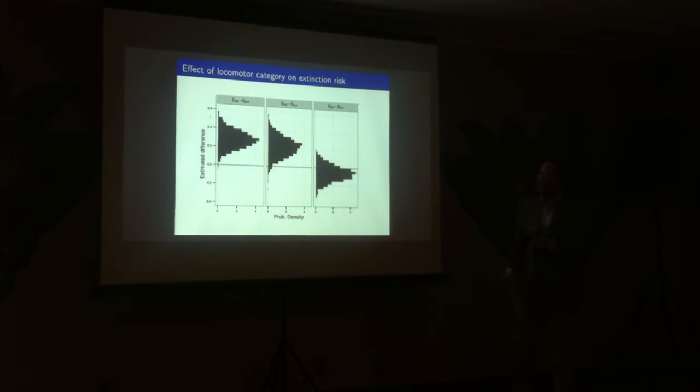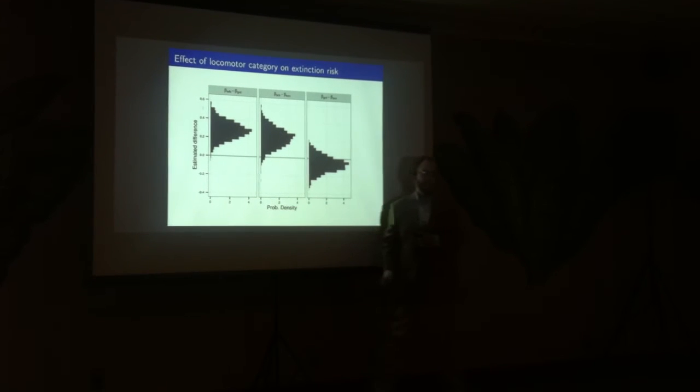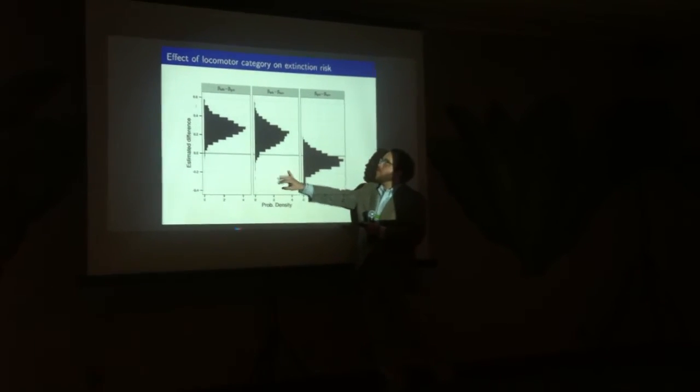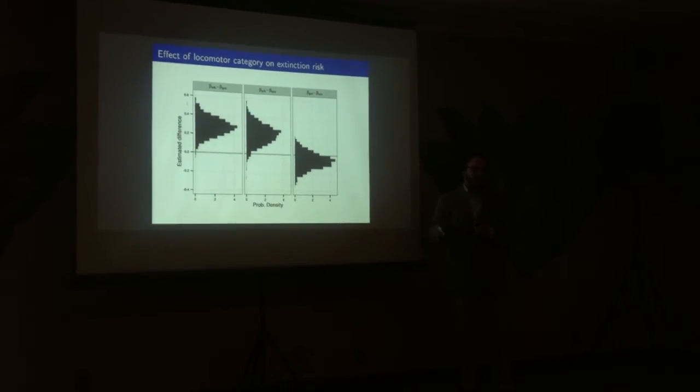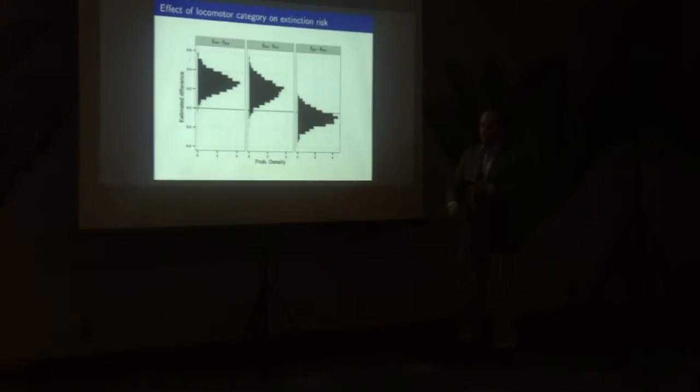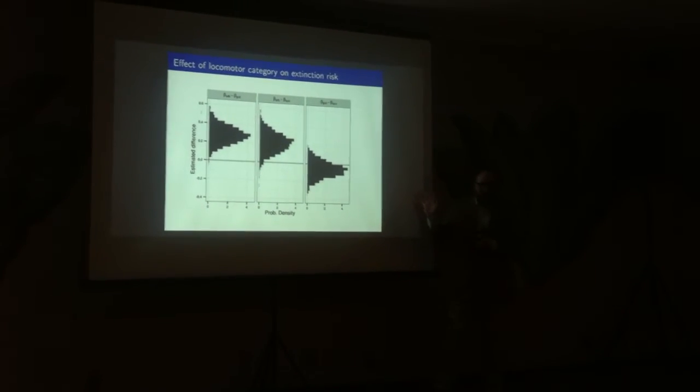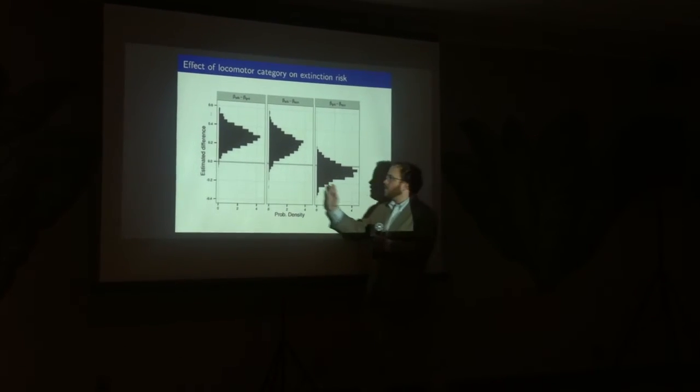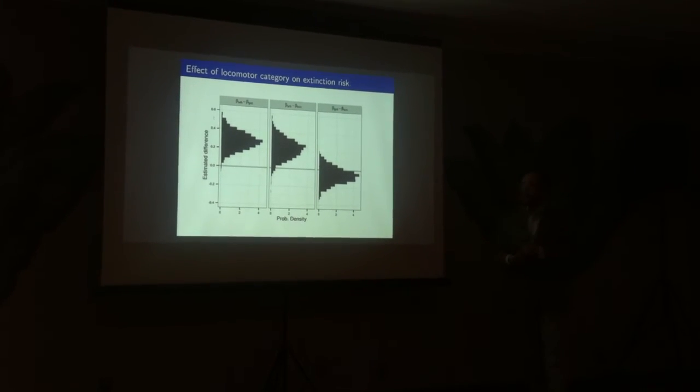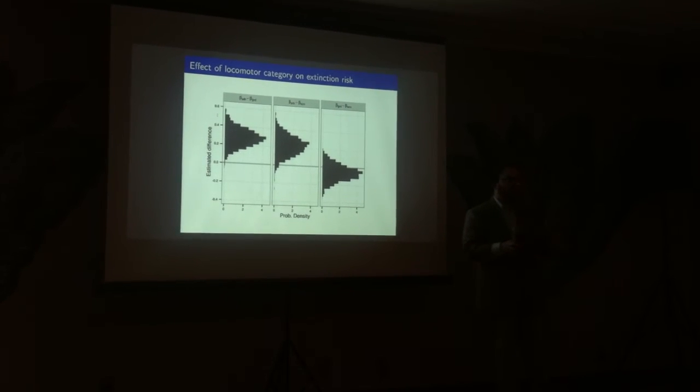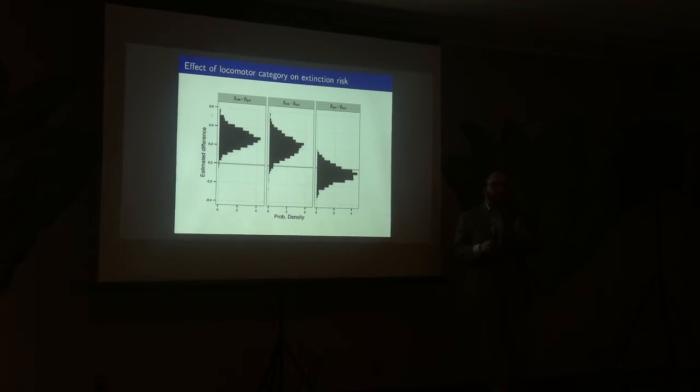So we can do similar things with locomotor category. We have arboreality versus ground dwelling. It's great to be ground dwelling, it's not great to be arboreal. Similar situation with arboreality and scansoriality. Scansoriality is a term describing that you can do kind of both. You can think of mice. And then we have ground dwelling and scansoriality, which are no evidence that one is necessarily better than the other, or no strong evidence. But again, this idea that if you have a more generalized system that's ground dwelling or scansoriality, you're more likely to have a greater duration in the fossil record. If you're arboreal, you might be having a greater risk of habitat loss.